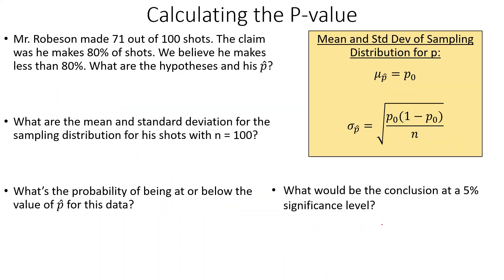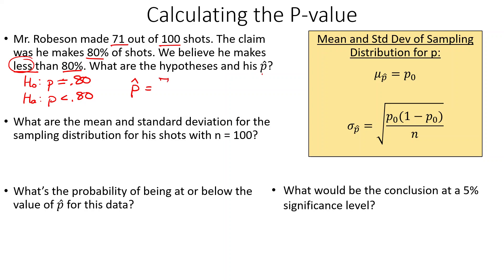Here's an example. We'll stick with the example we've been doing — the trash-can basketball shots. Mr. Robson made 71 out of 100 shots. The claim was that he made 80% of his shots, but we believe it's less than 80%. The null hypothesis is that p equals 80%, the alternative is p is less than 80%, and p-hat is 71 out of 100, which is 0.71. The 100 here is our n, our sample size.